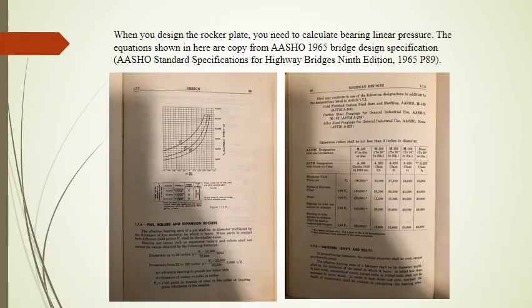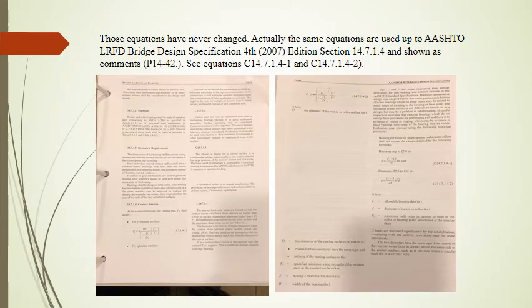When you design the rocker plate, you need to calculate bearing linear pressure. The equations shown here are copied from the AASHO 1965 Bridge Design Specification — AASHO Standard Specifications for Highway Bridges, 9th Edition, 1965, page 89. Those equations have never changed. In fact, the same equations are used up through the AASHTO LRFD Bridge Design Specification, 4th Edition, 2007, Section 14.7.1.4, shown as comments on page 1442 — see equations C14.7.1.41 and C14.7.1.42.